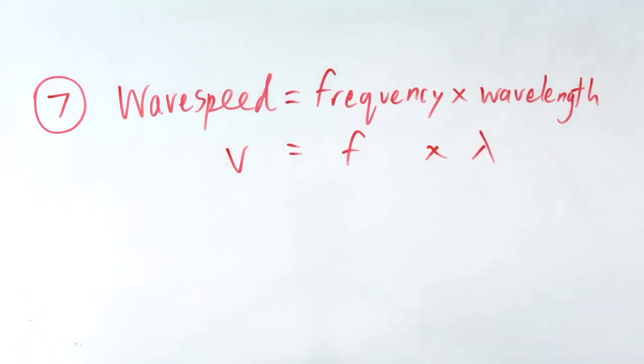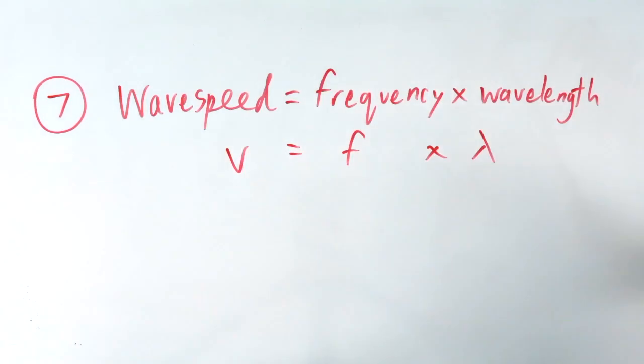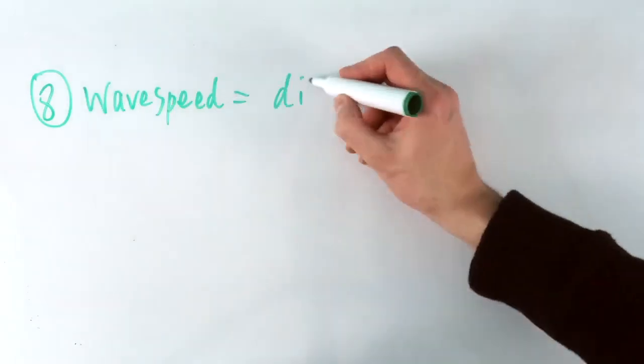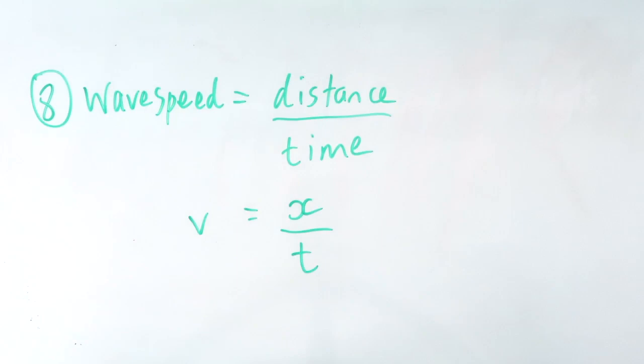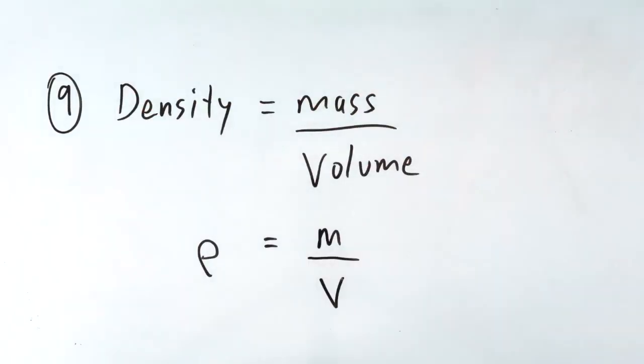Seven, wave speed equals frequency times wavelength. Eight, wave speed equals distance divided by time. Nine, density equals mass divided by volume.